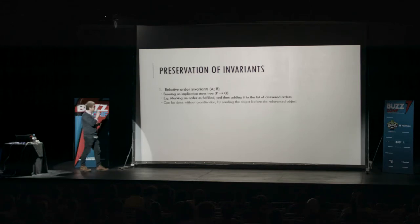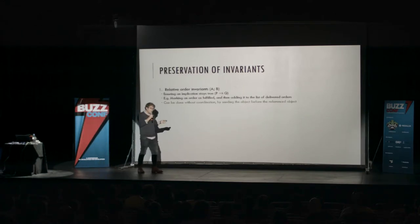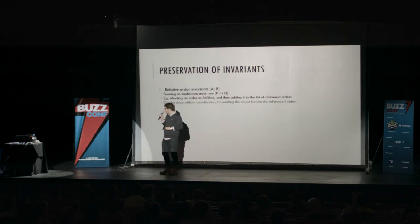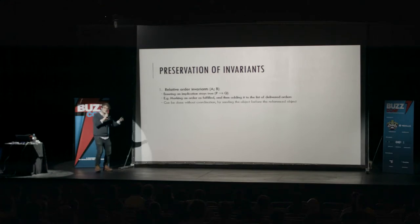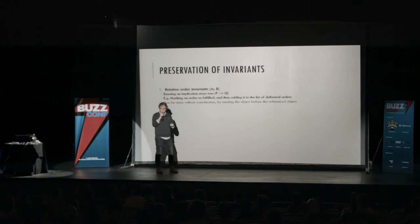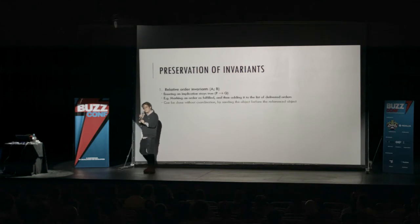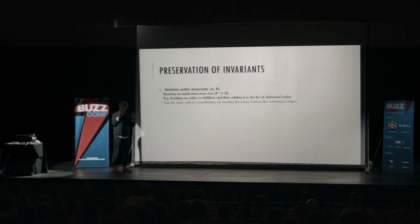The first is relative order invariants — sequencing operations A and B. If condition A becomes true and we only want to perform B if A is true, and A is a condition that will stay true, then we don't need consensus for this. It can be done with weak ordering. For example, if I mark an order as fulfilled and then want to deliver all fulfilled orders, as long as I know the marking has been done, the following update will always be safe. This only works if you have causal ordering.